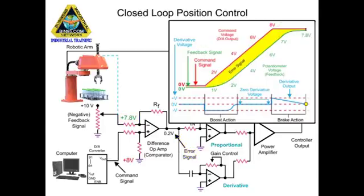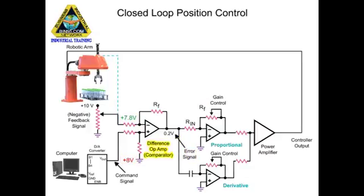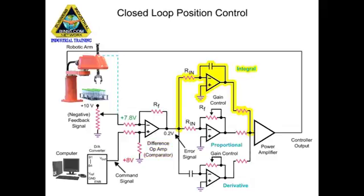With a reduced error signal due to feedback voltage and command voltage not being equal, a steady state error condition exists. In this condition, the difference op-amp creates a steady voltage and the arm continues to move. To overcome the steady state error, an integral amplifier is added to the circuit.